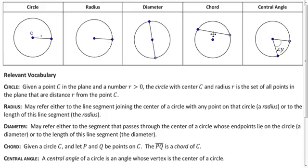A chord is just a segment with endpoints on a circle. And one thing to note is that a diameter is actually a type of chord. And a central angle is just an angle that has a vertex that is also the center of a circle.